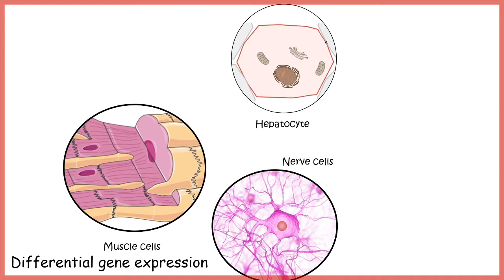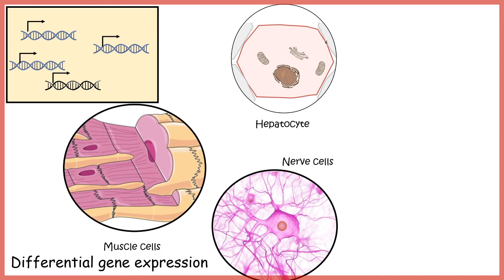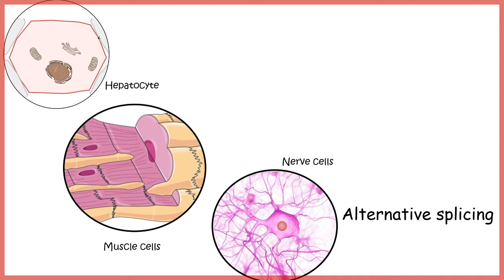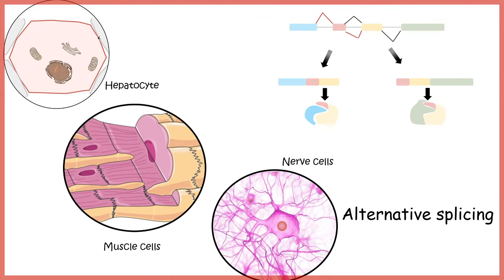For example, hepatocytes, nerve cells, and muscle cells all have unique identities and functions. These can be generated through differential gene expression, but there is another way: alternative splicing. Using the alternative splicing machinery in a combinatorial way with exons, different mRNAs can be produced that are unique to a hepatocyte or a nerve cell, leading to unique proteins with different functionality.